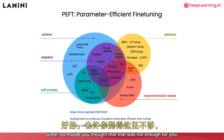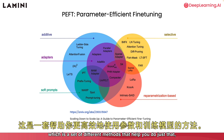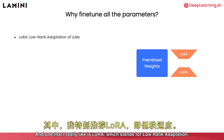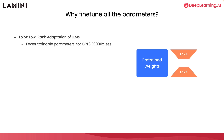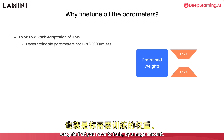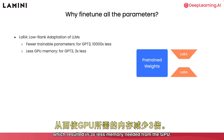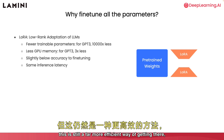If you want to work with much larger models, there's something called PEFT — parameter efficient fine-tuning — which is a set of methods that help you be much more efficient in how you use your parameters and train your models. One I really like is LoRA, which stands for low rank adaptation. For GPT-3, they found they could reduce the number of parameters to train by 10,000x, resulting in 3x less GPU memory needed. While you get slightly below the accuracy of full fine-tuning, it's still a far more efficient way of getting there.